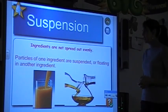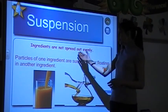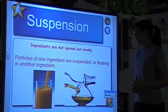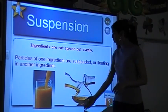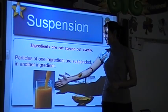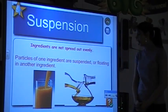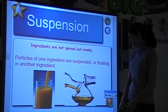Also, we would be able to see a suspension. The ingredients are not spread out evenly. Particles of one ingredient are suspending or floating in another ingredient. We see this in orange juice, and oil and vinegar salad dressing is another example.